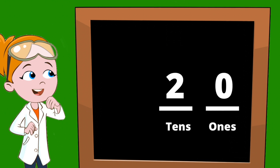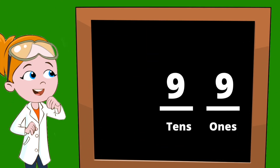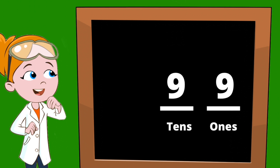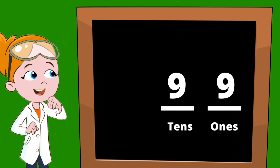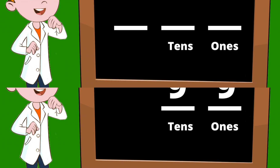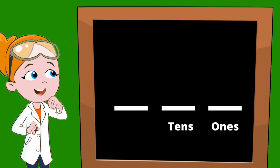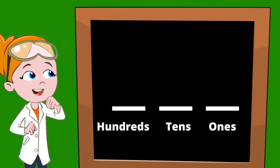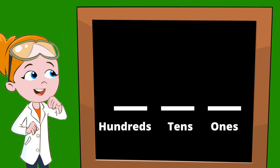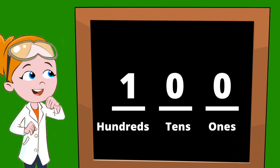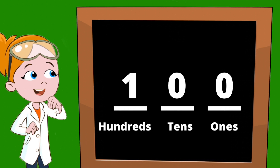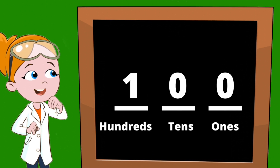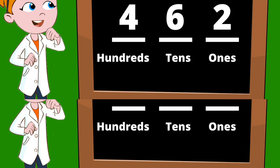When the tens and the ones get all the way to the top at nine and nine — the number ninety-nine — we have to add another digit. That digit's value is going to be hundreds. So if we have the number one hundred, we have one hundred with zero tens and zero ones.